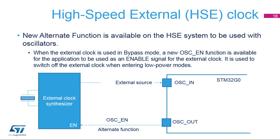In external source mode, also called HSE bypass mode, an external clock source must be provided with a frequency of up to 48 MHz. The external square, sinus, or triangle clock signal with 40 to 60% duty cycle must drive the OSC in-pin. The OSC out-pin can be used as GPIO, or configured as an OSCEN alternate function to provide a signal enabling the stop of the external clock synthesizer when the device enters low-power modes.